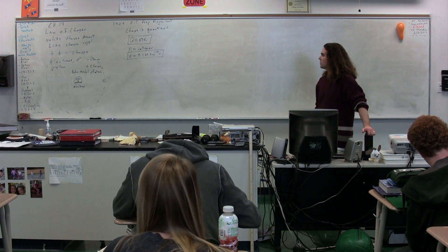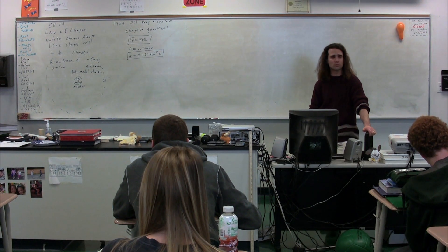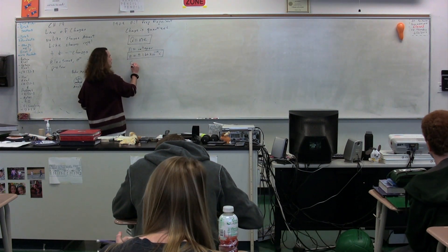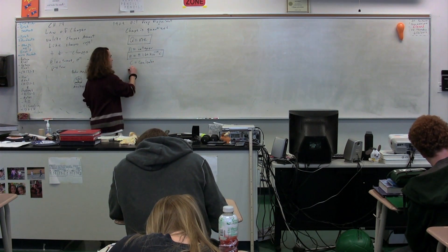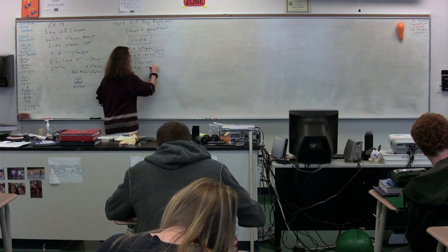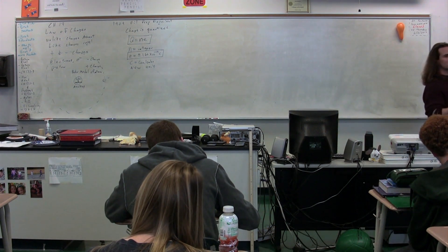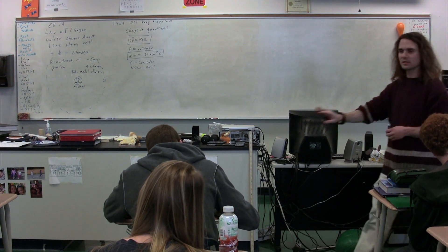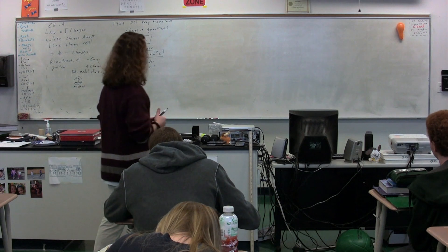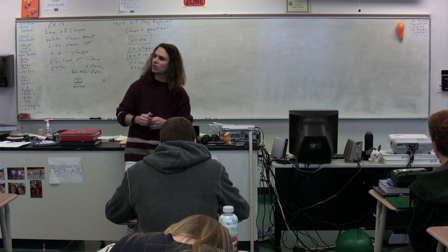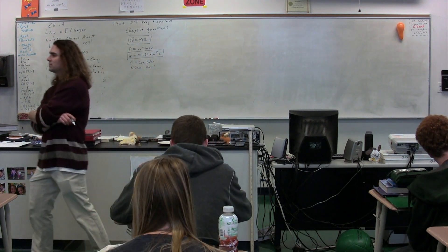So where does this fundamental charge come from — positive or negative 1.60 times 10 to the negative 19 coulombs? Coulombs I do need to define: C stands for coulombs, C-O-U-L-O-M-B-S. It is a new dimension, a new SI unit — the coulomb. It is not a base SI unit, however; amps or coulombs per second are actually the base SI units, but that has to do with current and we're not there yet. Any charge on any object is going to be an integer multiple of 1.60 times 10 to the negative 19 coulombs, the fundamental charge.